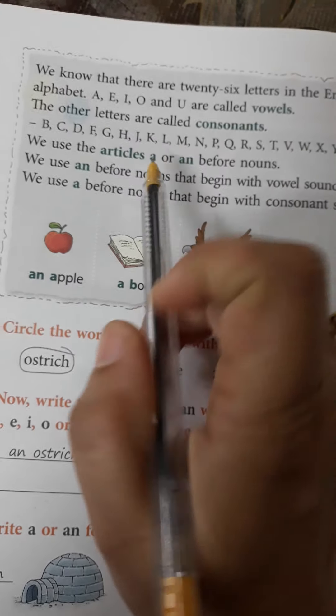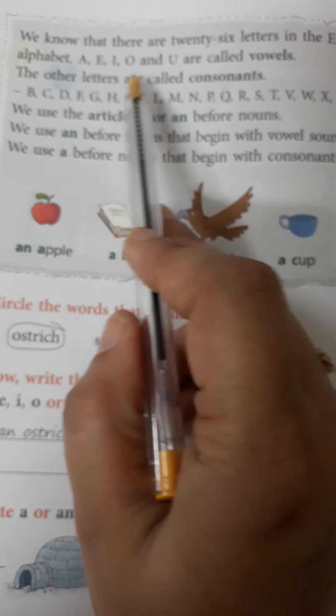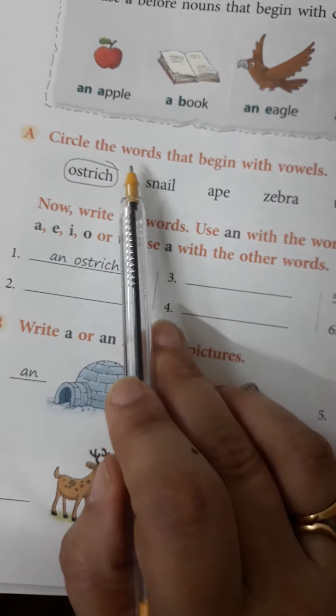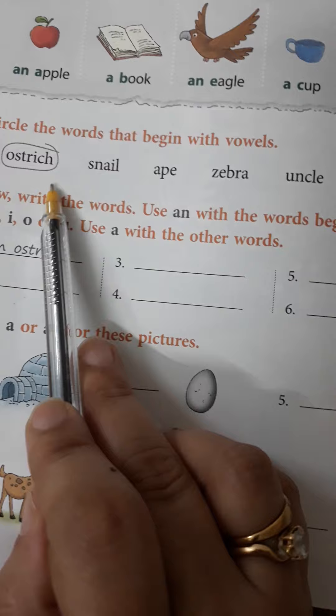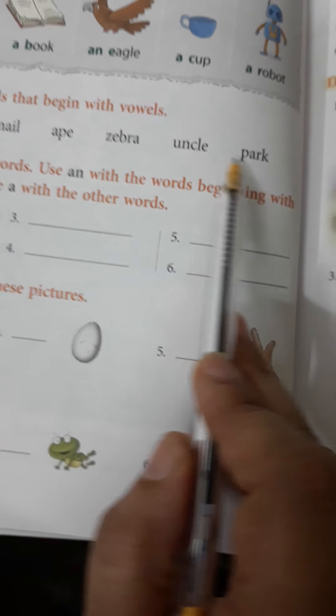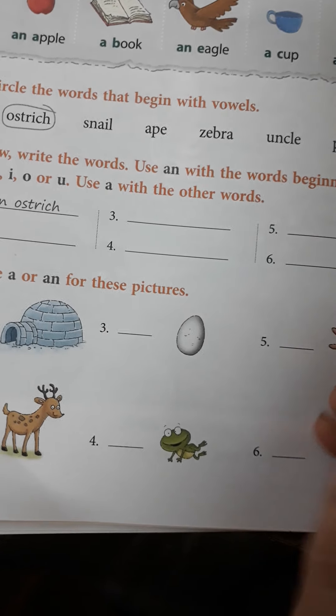Now, let's move on to the next page in your book. You can see here, they have also told you these are the consonants and A, E, I, O, U are called vowels. Let's read out these words. Ostrich. Snail. Ape. Zebra. Uncle. Park.